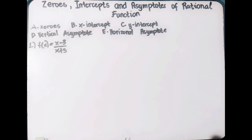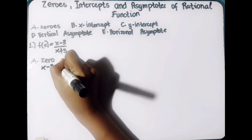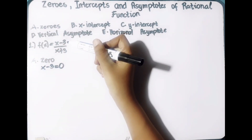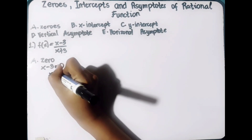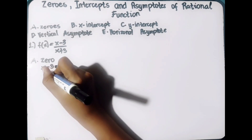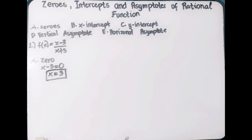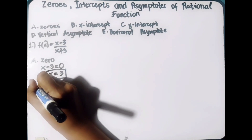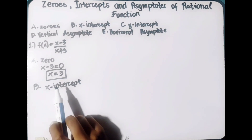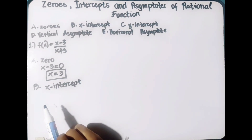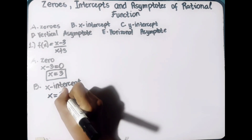First, let us get the zeros — the value of x that can make our function zero — by equating the numerator to zero. Our numerator is x minus 3 equals zero, so x equals 3. Therefore, 3 is the zero of the function. Since 3 is a real zero of the function, 3 is also the x-intercept, so x equals 3.